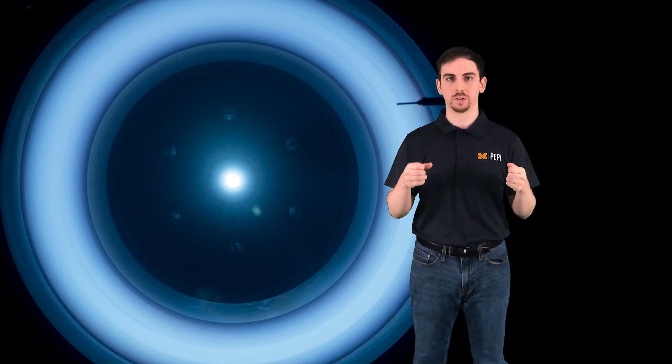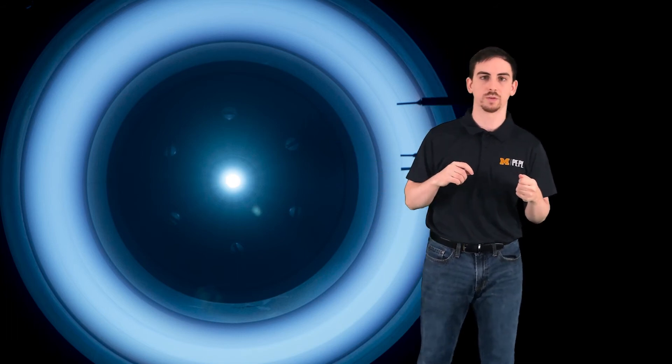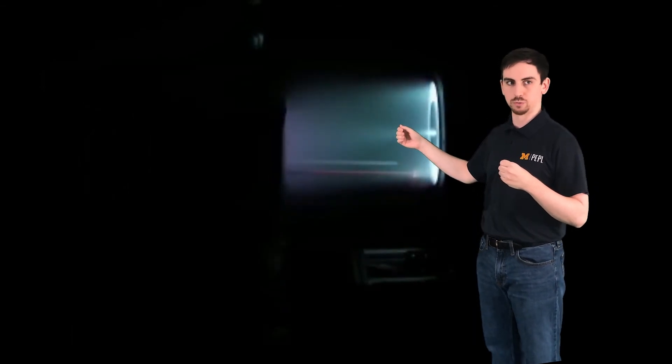Now we can test this using experimental methods. So let's cut to a picture of the Hall effect thruster running from its side. Now we can see here that we've set up some probes on the far downstream plume and we're going to inject those up into the acceleration region where the ions are accelerated and we believe this plasma wave starts.